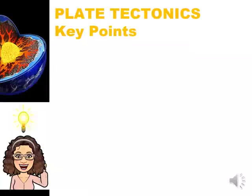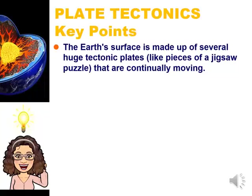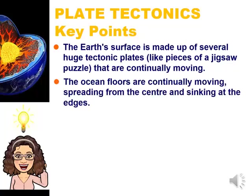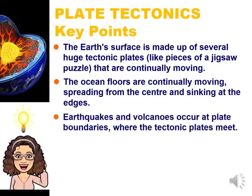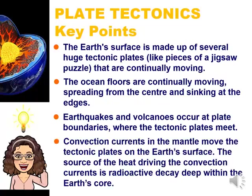Let us remember these four key points about plate tectonics. First, the Earth's surface is made up of several huge tectonic plates, just like pieces of a giant jigsaw puzzle, and they are continually moving. Second, the ocean floors are continuously moving, spreading from the center and sinking at the edges. Third, earthquakes and volcanoes occur at plate boundaries where the tectonic plates meet. And finally, convection currents in the mantle move the tectonic plates on the Earth's surface, and the source of the heat driving these convection currents is radioactive decay deep within the Earth's core.